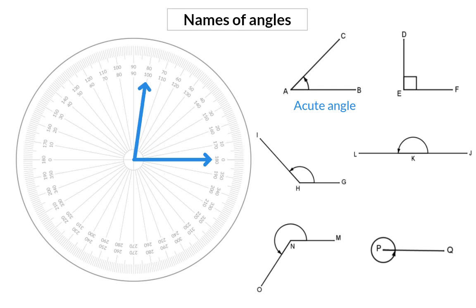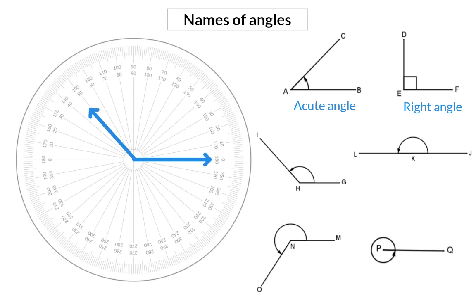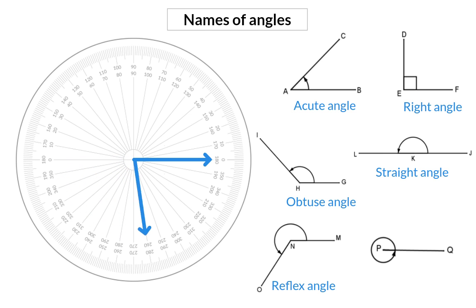As soon as it is exactly 90 degrees, it is called a right angle. When it is bigger than 90 but smaller than 180 degrees, we call it an obtuse angle. Measuring an angle that lies on a straight line is exactly 180 degrees and is called a straight angle. Increasing the angle even more is called a reflex angle, up to 360 degrees, which is then a revolution.